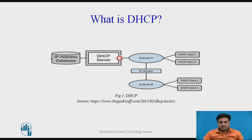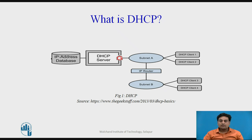We will start our lecture with a basic question: what is DHCP? DHCP is Dynamic Host Configuration Protocol and is a client-server protocol designed to provide four pieces of information for a displaced computer or a computer which is booted for the first time. It automatically provides a host with its IP address and other related configuration information such as subnet mask and default gateway.